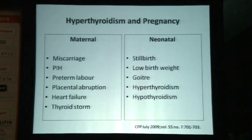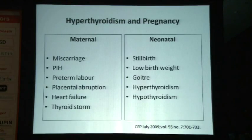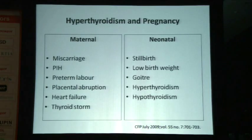On the other hand, hyperthyroidism also affects the mother and the baby — causing stillbirth, low birth weight, and goiter. Transfer of antibodies from the mother to the baby can also cause transient hyperthyroidism in the newborn.